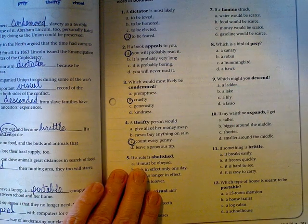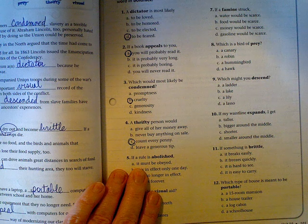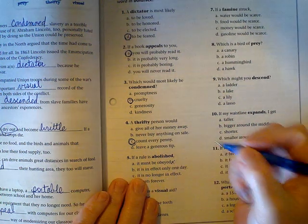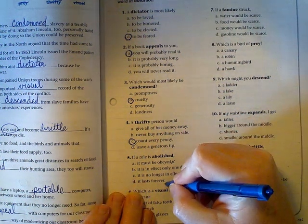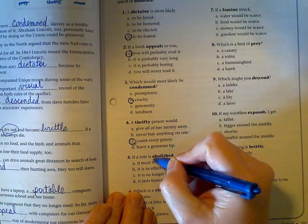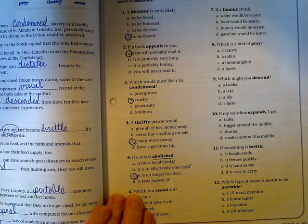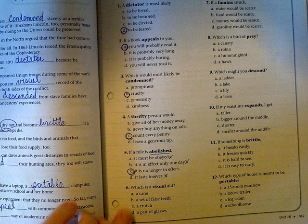If a rule is abolished - like let's say the uniform rule, wouldn't that be fun? So if that rule was abolished: must it be obeyed? No. Is it in effect only one day? No. Does it last forever? Well it probably will, but not if it were abolished. It is no longer in effect. Which is a visual aid?